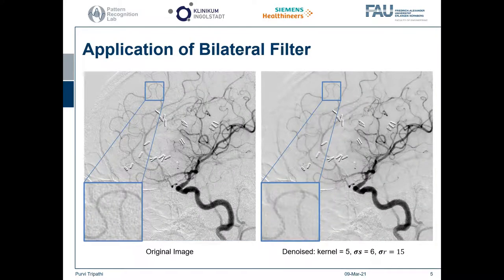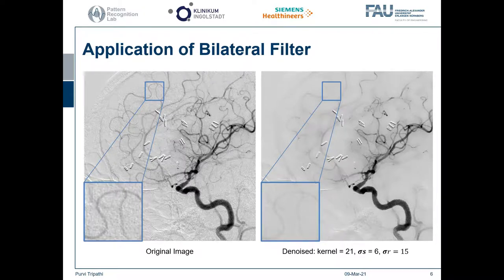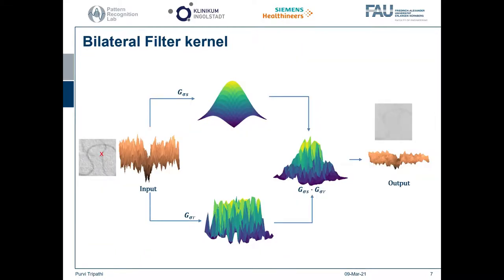Here is an example of the application of the bilateral filter on DSA. When we closely look at the region with fine vessels, we see some de-blurring while preserving the edges, but there is still background noise visible. If we parameterise the filter for further denoising by increasing the kernel size, the background is nicely denoised and the bigger vessels are well preserved, but the low contrast vessels start to fade out. When we take this region of interest and plot the filter kernel with these parameters, you can see that the intensity of the noise is very similar to the intensity of the low contrast vessel, and the range kernel no longer identifies these vessel edges, which results in a very flat output. So there is clearly a need to further improve the bilateral filter for DSAs.